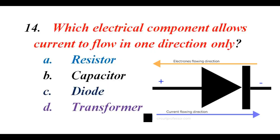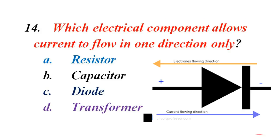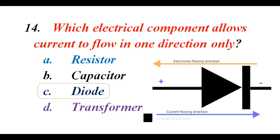Which electrical component allows current to flow in one direction only? A. Resistor. B. Capacitor. C. Diode. D. Transformer. The correct answer is C. Diode.